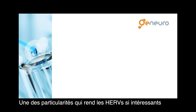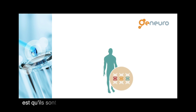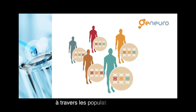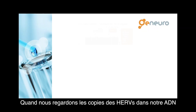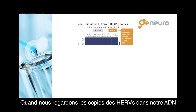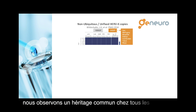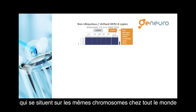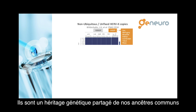One of the particularities that make HERVs so interesting is that they introduce a big genomic diversity within human populations. When we look at the copies of human endogenous retroviruses in our DNA, we observe that there is a legacy that is common to the entire human race, much like classical genes, which are located on the same chromosomes in all individuals — a shared heritage from our common ancestry.